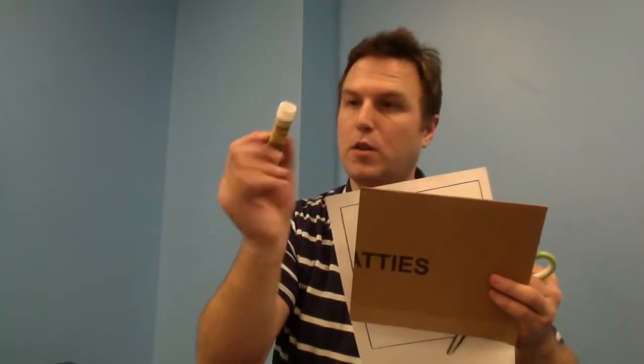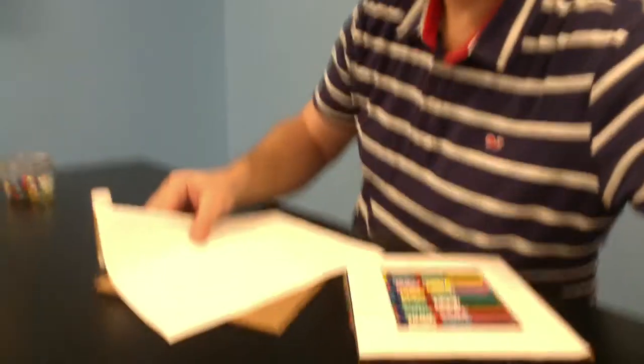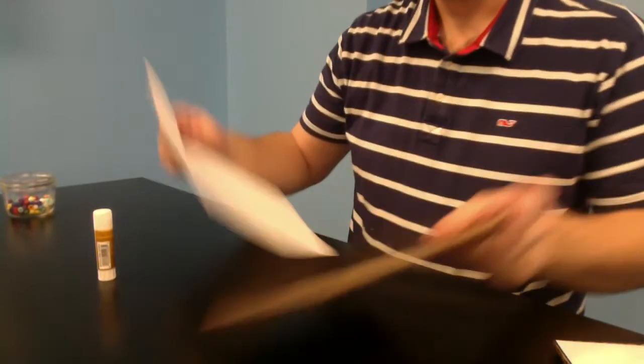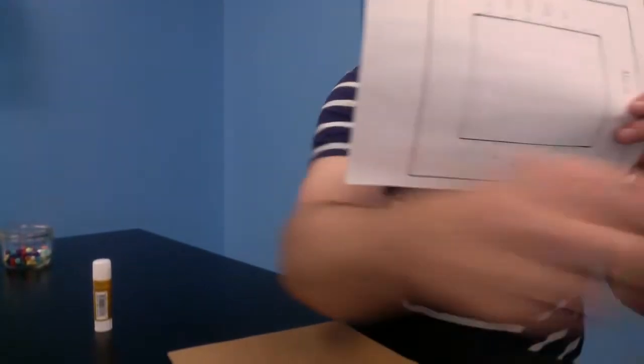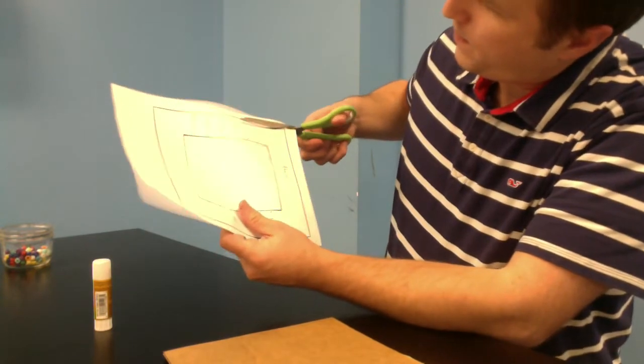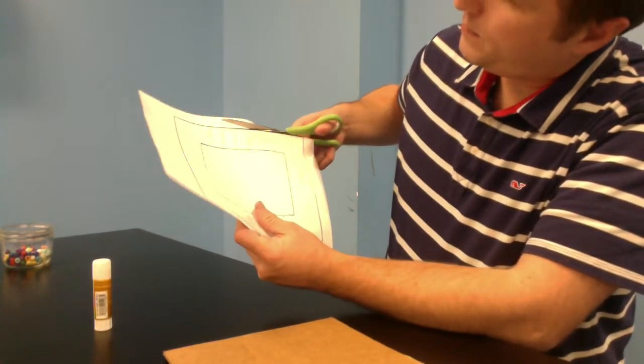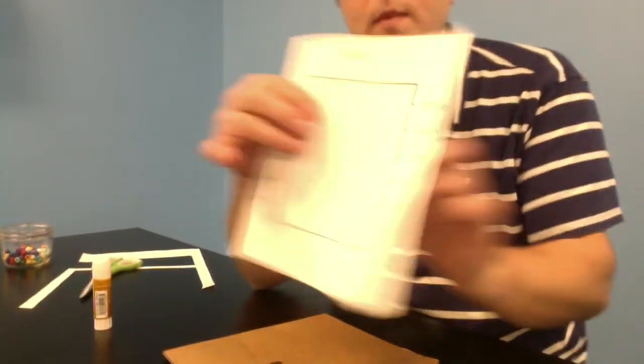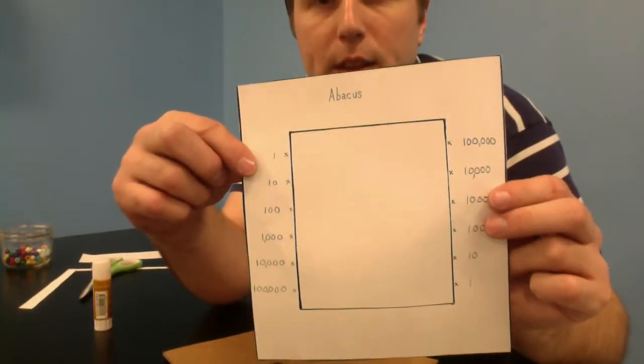So the first thing you're going to do is you're going to cut the template out like so, right along the lines until it looks like this.